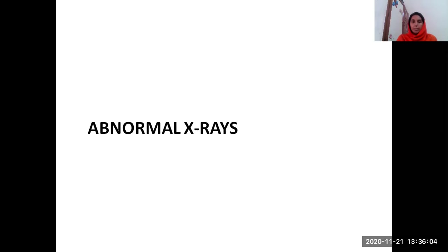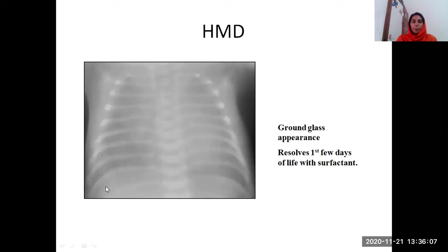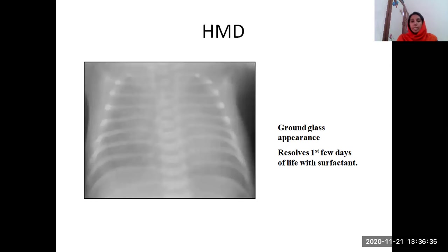Now let us see some abnormal x-rays. This is the ground glass appearance of the lung fields, seen in case of hyaline membrane disease, seen in a neonate. In which condition is it more common? It is seen commonly in preterm babies. The treatment will be surfactant. Sometimes we may have to intubate before giving surfactant. There is a technique called INSURE technique where we intubate, give surfactant, and extubate.